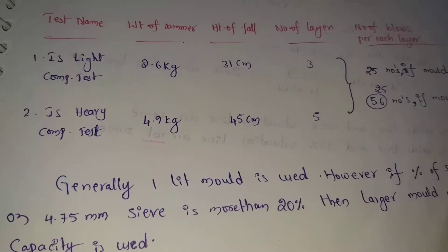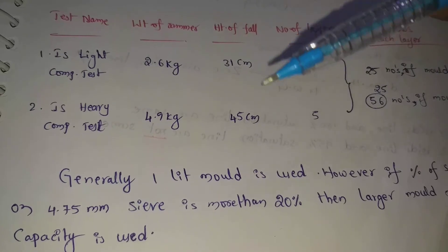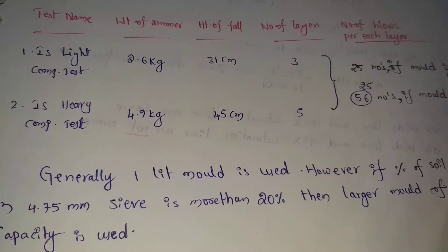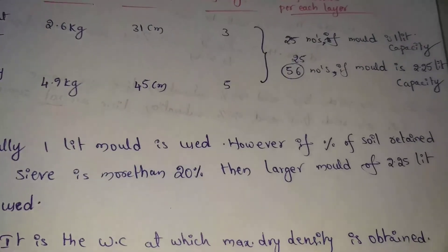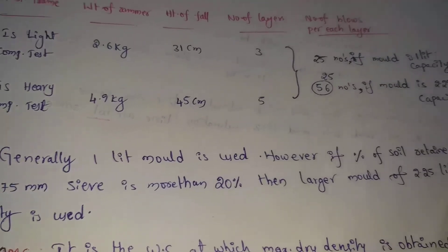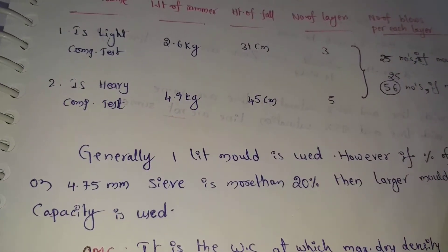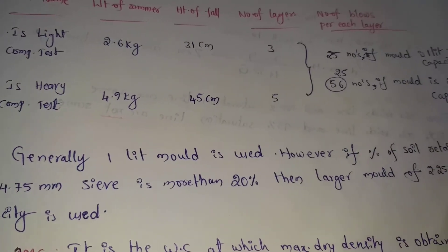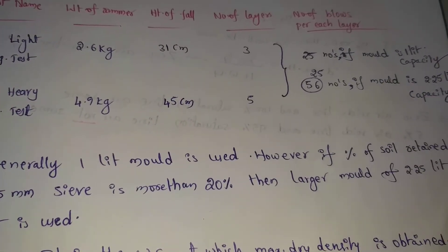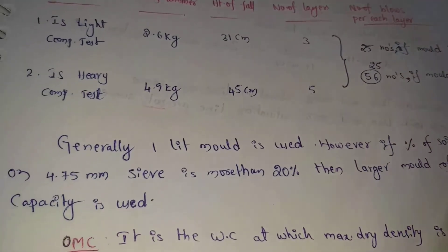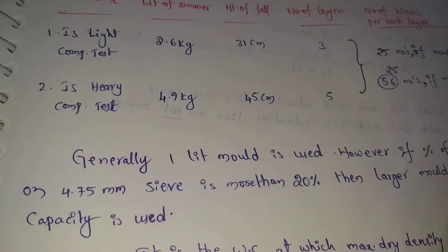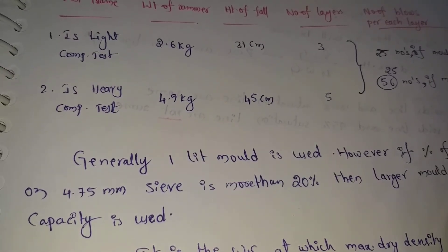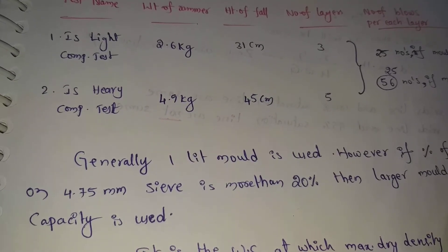Generally, a one-liter mold is used for the compaction test. However, if the percentage of soil retained on the 4.75mm sieve is more than 20%, then a larger mold of 2.25 liter capacity is used.